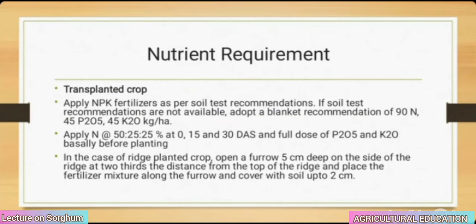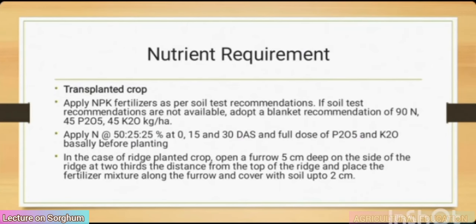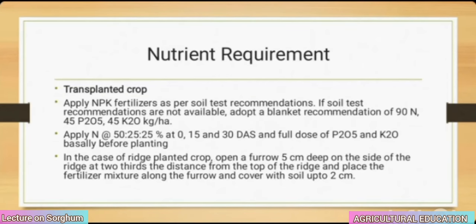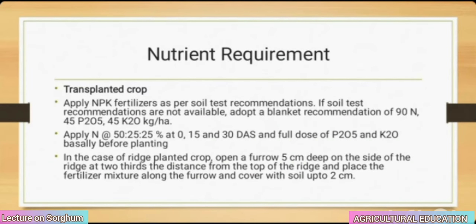If soil test recommendations are not available, adopt a blanket recommendation of 90 kg nitrogen, 45 kg P₂O₅ and 45 kg K₂O per hectare. Apply nitrogen at the rate 50-25-25% at 0, 15 and 30 days after sowing, and full dose of P₂O₅ and K₂O as basal before planting. In the case of ridge-planted crop, open a furrow 5 cm deep on the side of the ridge at two-thirds the distance from the top of the ridge, place the fertilizer mixture along the furrow and cover with soil up to 2 cm.